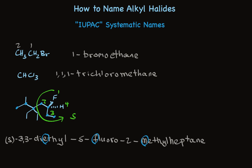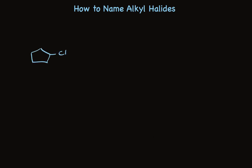We can apply this same system to ring compounds as well. First, a simple example — we looked at a compound like this for common names: cyclopentyl chloride. In systematic nomenclature, this is a cyclopentane with one substituent, the chloro group. To be completely correct, we'll put a 1 at the beginning, though it's not really needed since a single substituent is always on carbon 1 by definition. In any case, the full name is 1-chlorocyclopentane.